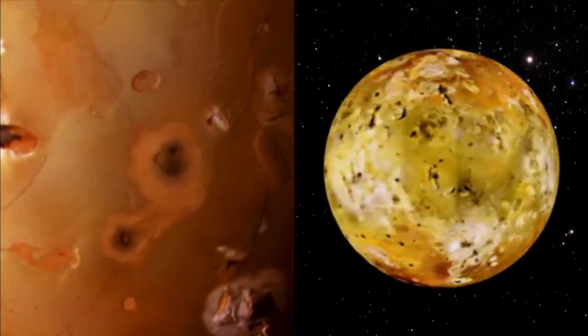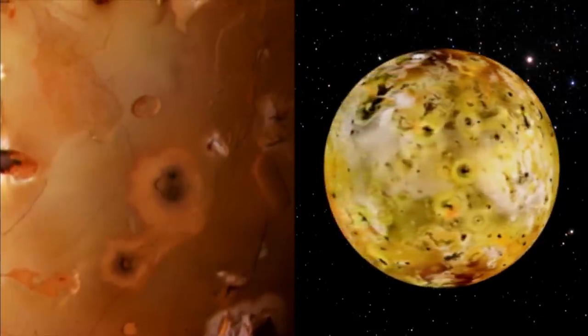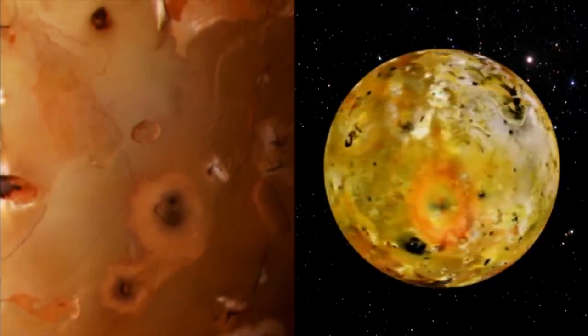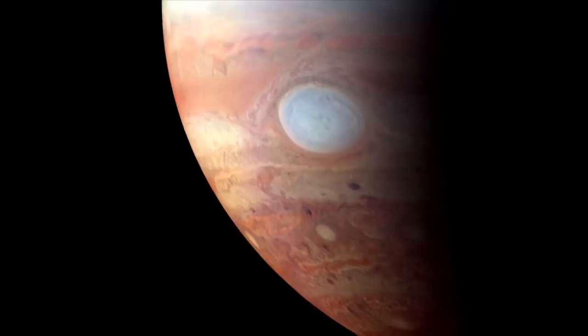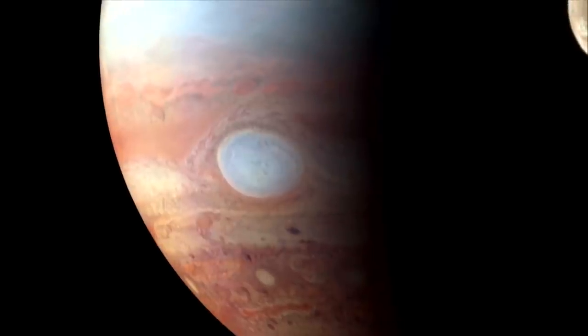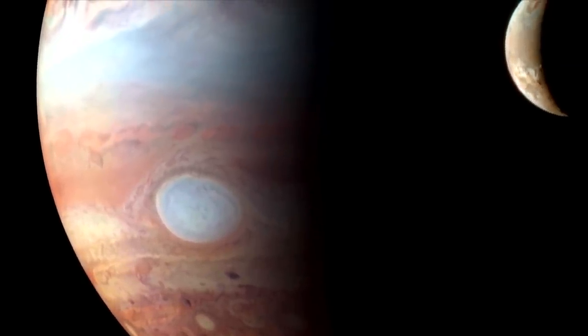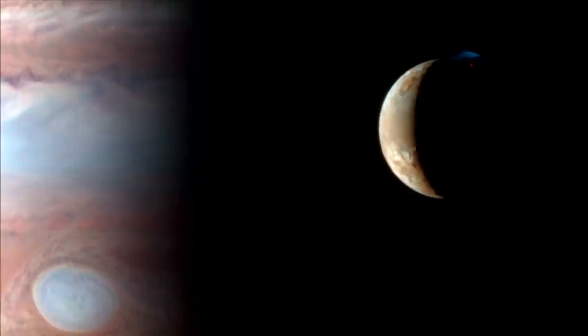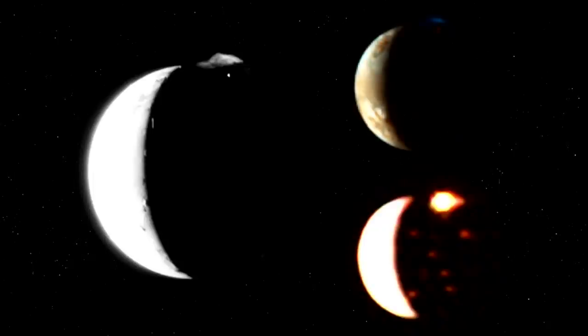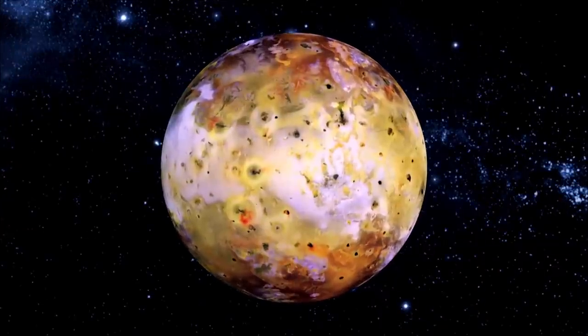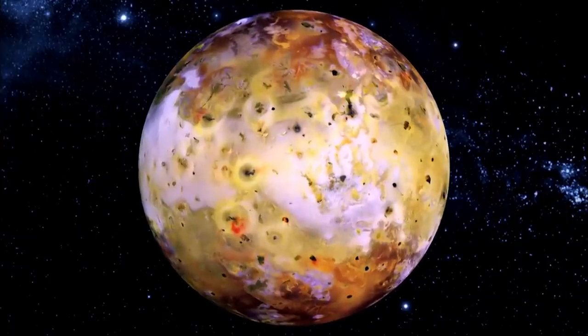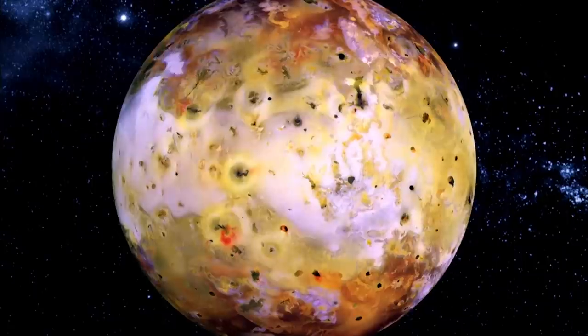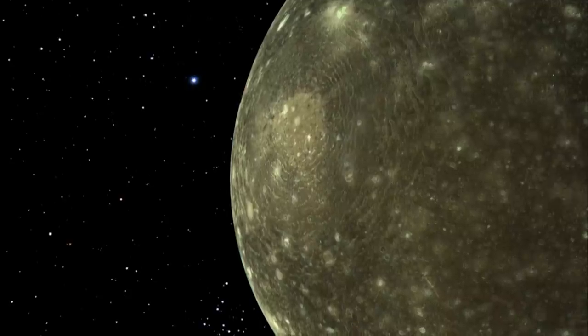Io's surface is one vast lava flow with more than a dozen active volcanoes towering over the sulfur rich landscape. The gravitational pull of Jupiter and some of its other large moons creates a tug-of-war inside Io which generates vast amounts of heat.